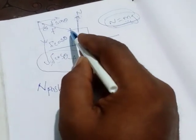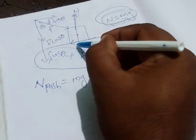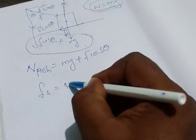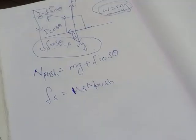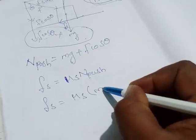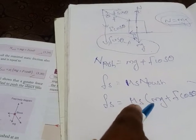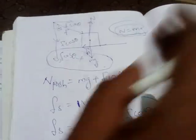When we apply force in this direction, the object moves in that direction, and static friction acts in the opposite direction. The static friction formula is Fs = μs × N_push, so Fs = μs(Mg + F cos theta). This means while pushing an object, a greater force needs to be applied to move it.